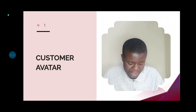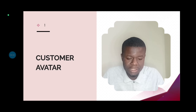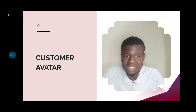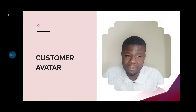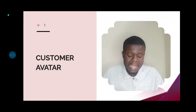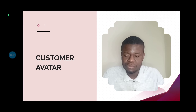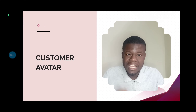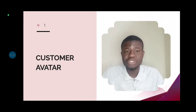Demographics is about location. For the AI traffic class, I was targeting Nigerians. The next point is behavior — how do those people behave? For the AI traffic class, you'll notice that AI images and portraits were already trending in Nigeria virtually everywhere.